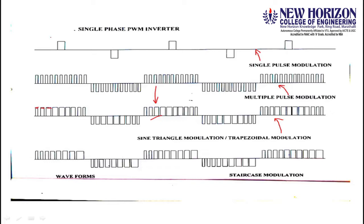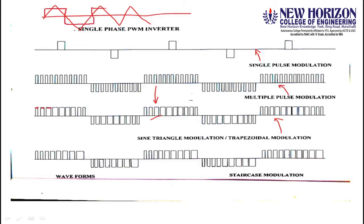For single pulse width modulation, we compare a reference waveform with a triangular carrier waveform. Wherever the triangular waveform is greater, we get a pulse. So one pulse is obtained per half cycle, and this is how the single pulse width modulation waveform is generated.